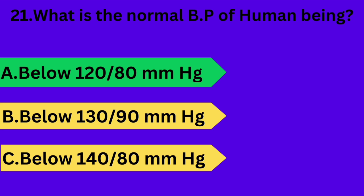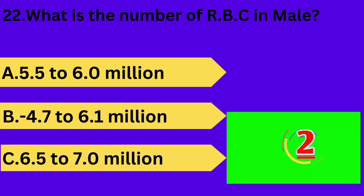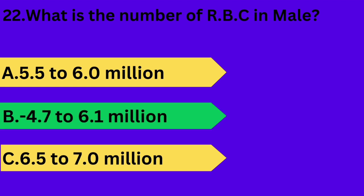And next question is: what is the number of RBC in a male? Option A: 5.5 to 6.0 million. Option B: 4.7 to 6.1 million. Option C: 6.5 to 7 million. Your time starts now. Answer is option B: 4.7 to 6.1 million.